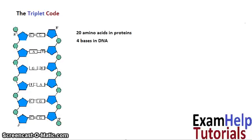So if we were to use one base for a code for an amino acid, we'd only have four different codes that we could use. So this wouldn't be enough to code for the 20 amino acids that we need to make. So it can't just be one base that codes for a particular amino acid.